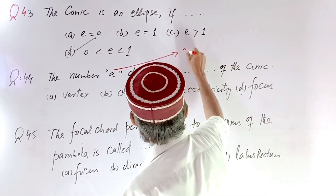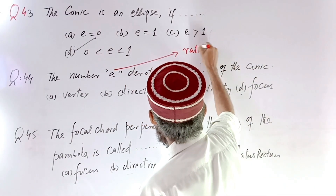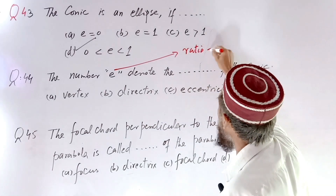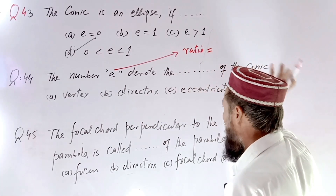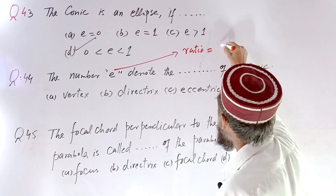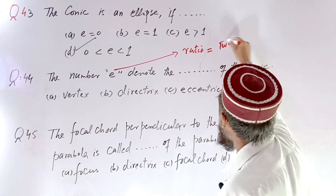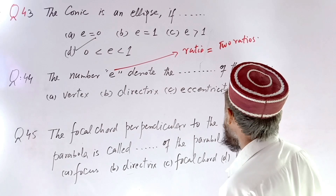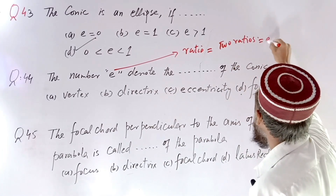This condition is called the ratio between two points and perpendicular — that ratio is called eccentricity.